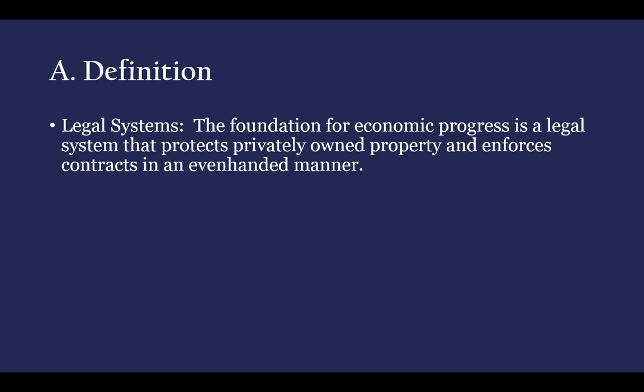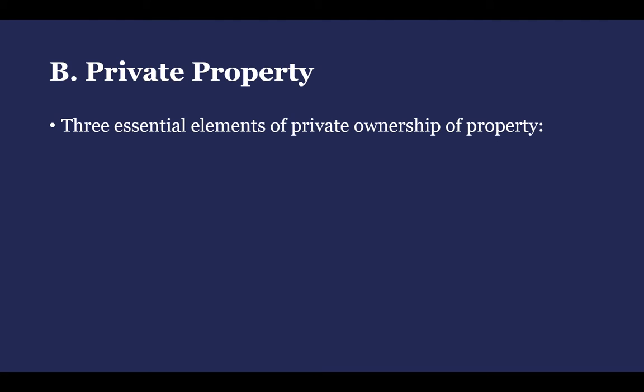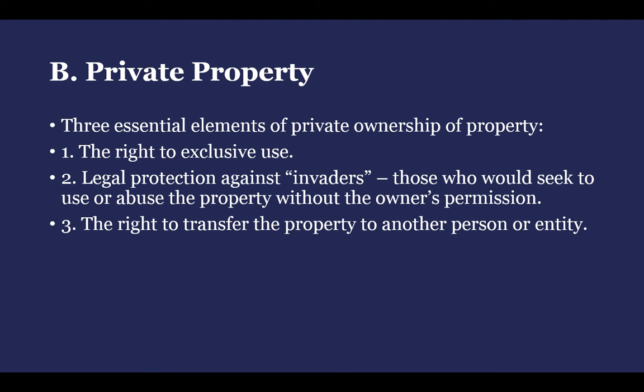This should make good sense to you from Romans 13, verses 1 through 7: government is established by God to keep man from exploiting each other because of our sinful nature. The three essential elements of private property ownership are the right to exclusive use, legal protection against invaders, and the right to transfer the property to another person — especially this issue of exclusive use.